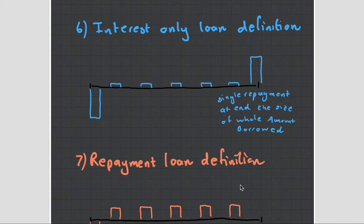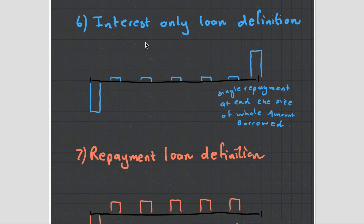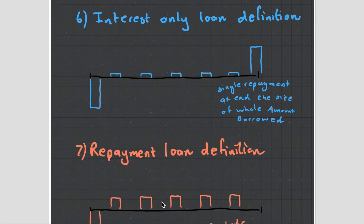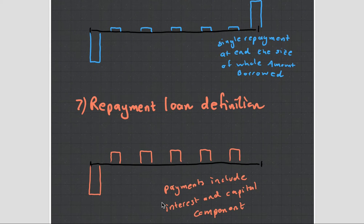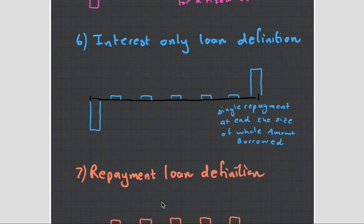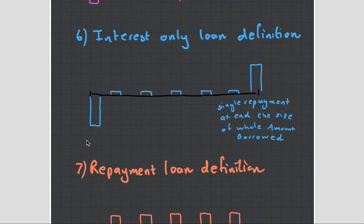What we're talking about now is you get two types of these when you make a loan or lend your money. There's the interest only loan and the repayment loan. Let's focus on the first one. So here, you make your payments. You make this and you get a single repayment at the end, which is the size of the whole amount borrowed. So let's say you invest $10, and interest is 10% per annum, then you'd get $1, $1, $1, $1, $1, and then you'd get your $10 back.